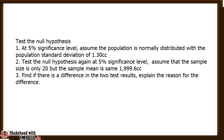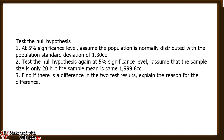Second, test the null hypothesis again at an alpha of 5 percent, assuming that the sample size is only 20 but the sample mean is the same, which is 1999.6 cc. Third, find if there is a difference in the two test results and explain the reason for the difference.